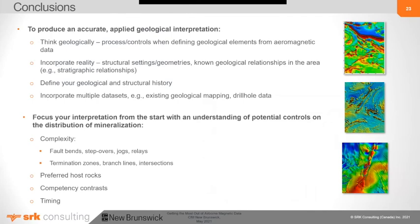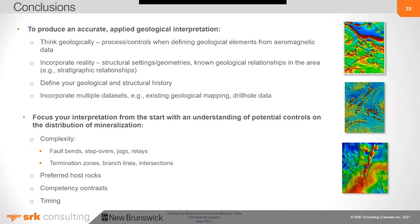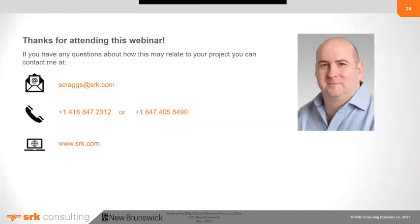In conclusion, to produce an accurate applied geological interpretation: think geologically — what are the processes and controls? When defining geological elements, incorporate reality. Define your geological and structural history and incorporate as many datasets as you can. Focus on interpretation from the start with an understanding of the potential controls on the distribution of mineralization — look for areas of complexity such as fault bends, step-overs, jogs, relays, termination zones, and consider preferred host rocks, competency contrasts, and timing of the various structures. Thank you to CIM for letting me present, and thank you all for listening.